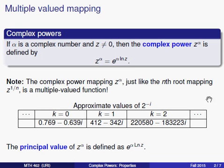If we want to talk about just a single value of 2 to the minus i or z to the alpha in general, it's convenient to talk about the principal value of z to the alpha. Now to define the principal value, we're going to use the particular value of the logarithm given by the principal value of the logarithm. So the principal value of z to the alpha is defined as e raised to the alpha times the principal value of the logarithm of z.